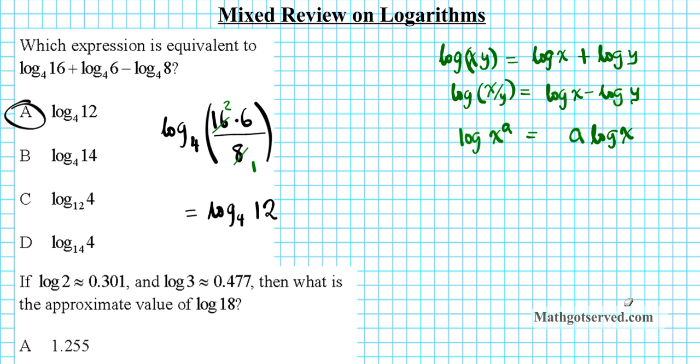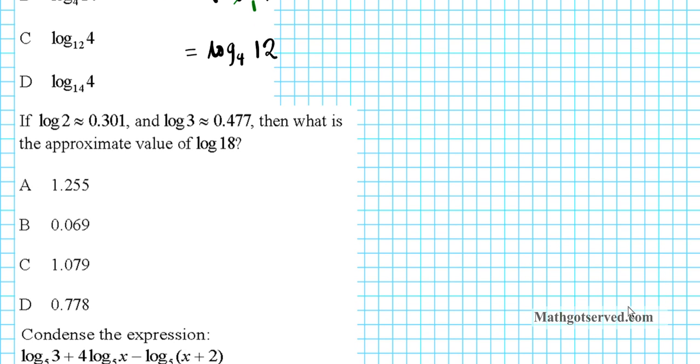Alright, let's take a look at the second example. It says if log of 2 is approximately 0.301 and log 3 is 0.477, then what is the approximate value of log 18?